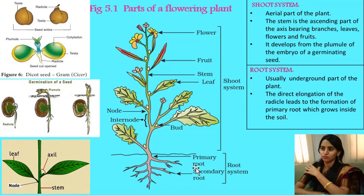Remember, roots are always positively geotropic and negatively phototropic. What do these terms mean? The roots always grow deep into the soil, that is towards the source of gravity — hence positively geotropic. And the roots grow away from the source of light — hence negatively phototropic.